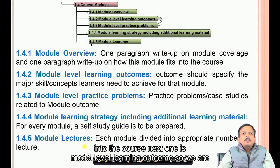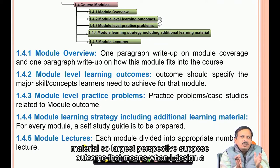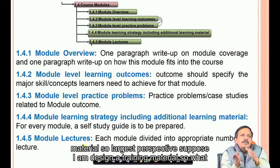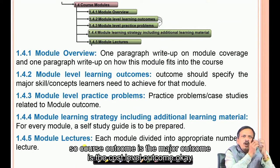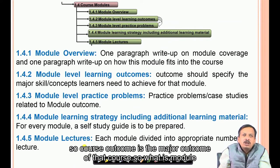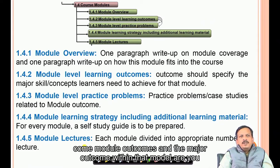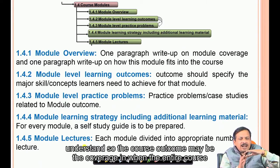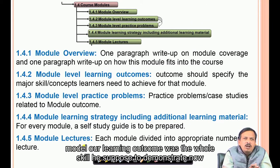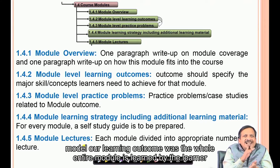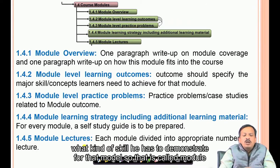Next is module level learning outcomes. We have already written course level learning outcomes — the ultimate goal of the training from the largest perspective. The module outcome is the major outcome within that module. Once the entire module is learned by the learner, the module outcome defines what kind of skill he has to demonstrate for that module.